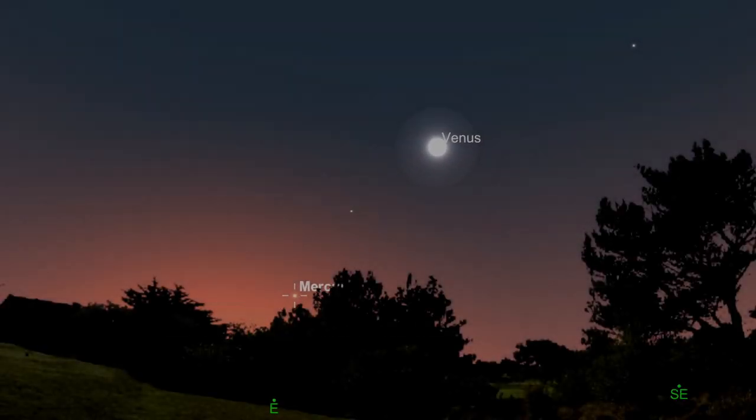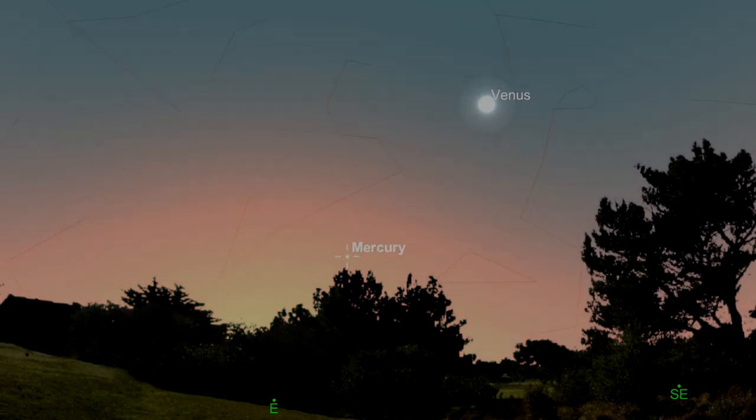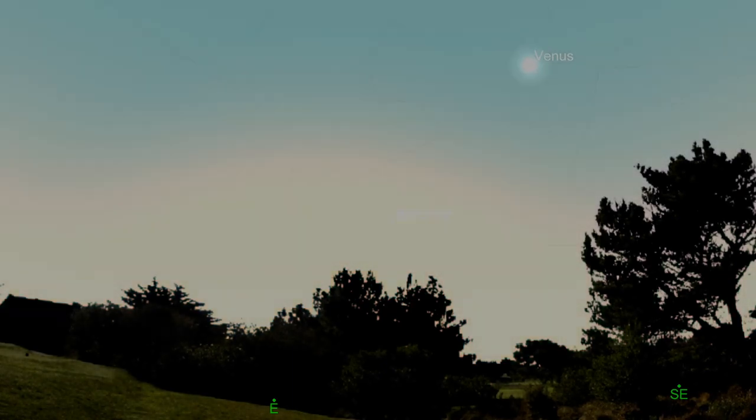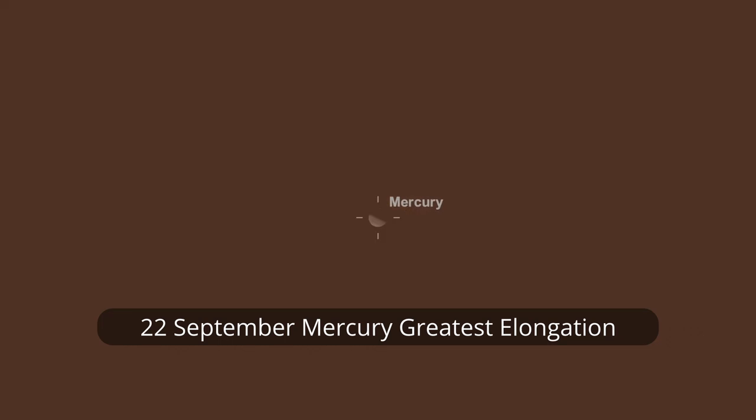If you're getting up early to see Venus in the morning sky you may as well try and catch little tiny fast Mercury as well. That's at its greatest elongation on the 22nd of September.